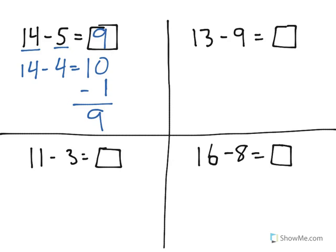The next one we have is 13 minus 9. Now, again, we're going to use 10s. Instead of taking away 9, let's take away 10 because I know 13 minus 10 is equal to 3. But the problem there is I took away one more than I should have, which means I need to put one back in to find out that 13 minus 9 is equal to 4.